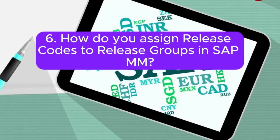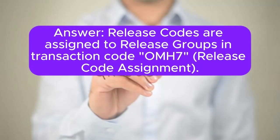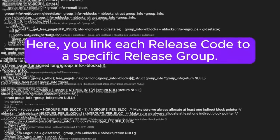Question 6: How do you assign release codes to release groups in SAP MM? Answer: Release codes are assigned to release groups in transaction code OMG7, release code assignment. Here, you link each release code to a specific release group.